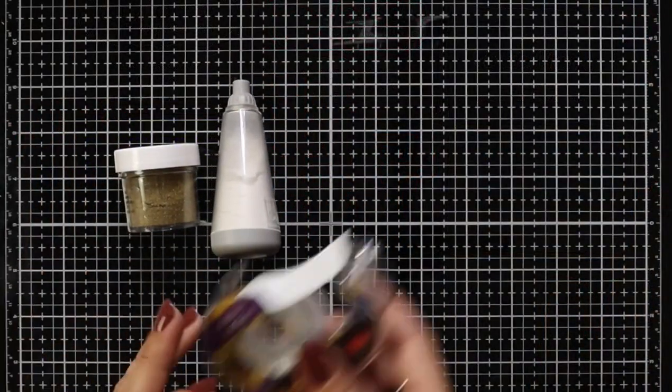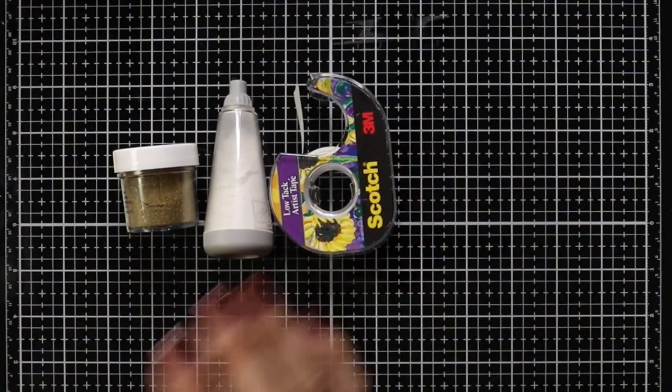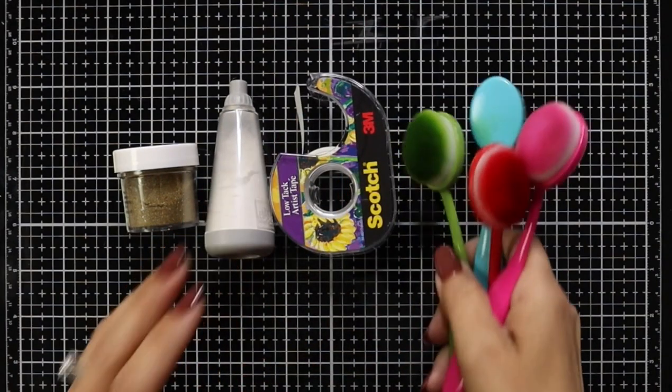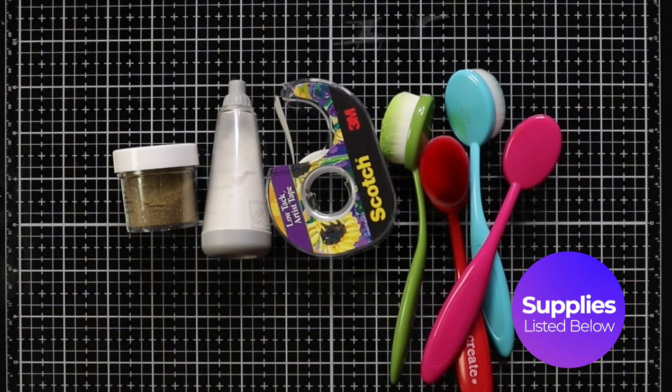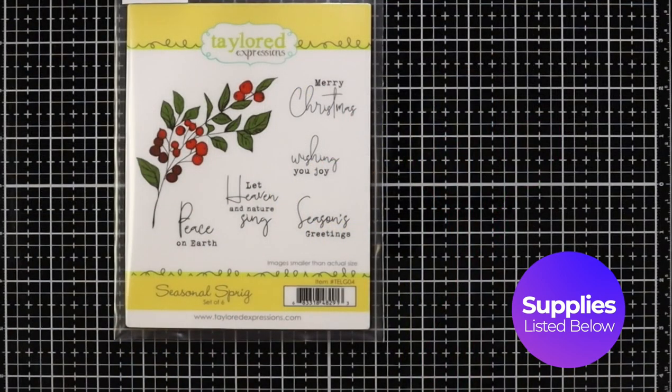Now I also have some additional supplies like the post-it tape, some anti-static powder, the golden embossing powder, and blending brushes. And there are a few supplies along the way that I'll be using as well.